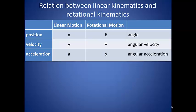Velocity and acceleration are given specific designations depending on whether the motion is linear or rotational. Rotational motion uses the omega for angular velocity and the alpha for angular acceleration.